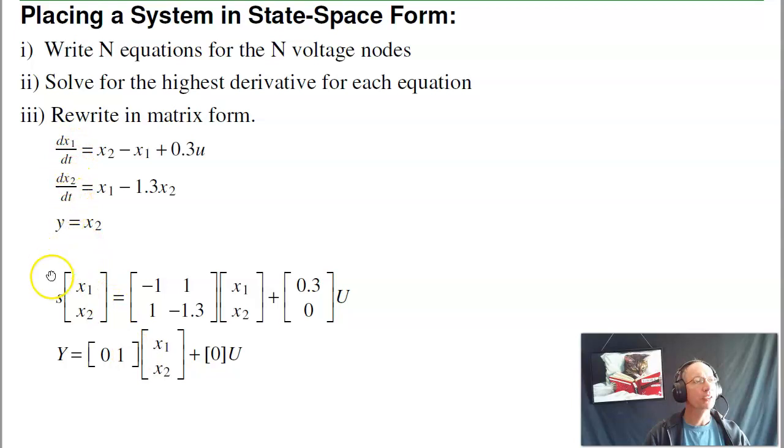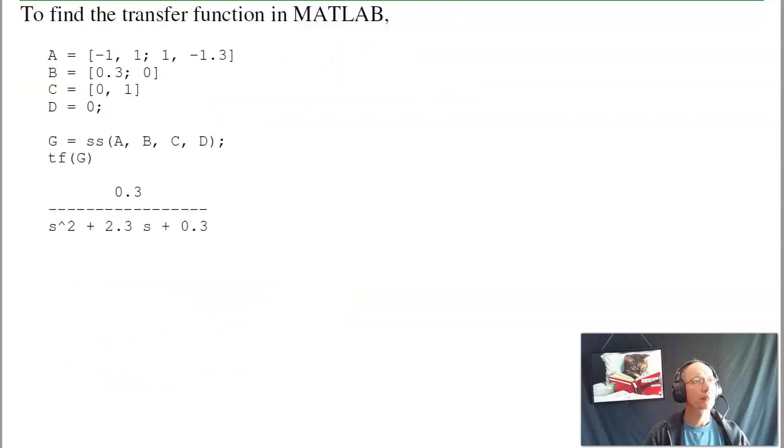Write it in matrix form. The derivative of X1 is X2, that's this one, minus X1 plus 0.3u. The second equation, dx2dt, is 1 times X1 minus 1.3 times X2 plus nothing times u. And if my output is X2, I'm going to pick off the second state, 0, 1.